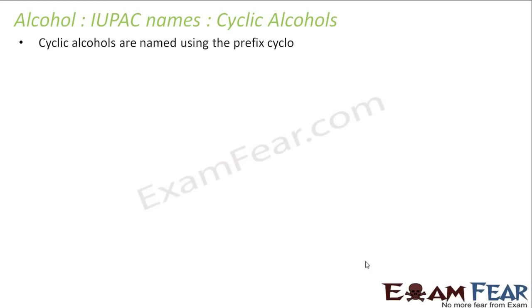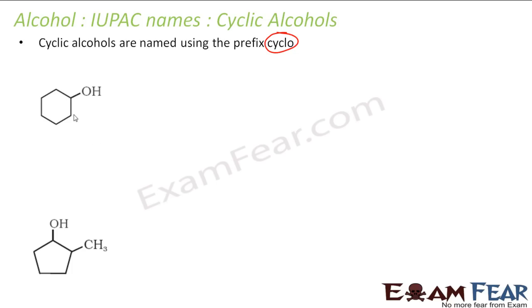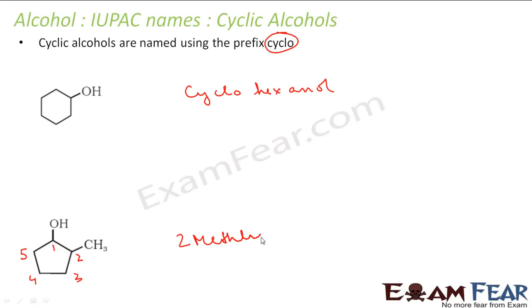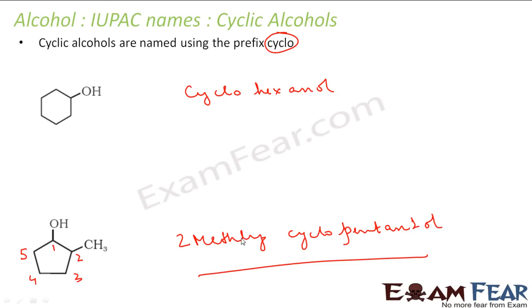Let's understand how to name cyclic alcohols — we use the prefix 'cyclo'. In this case, we have 1, 2, 3, 4, 5, 6 carbons in a ring — hexane — so it will be cyclohexanol. In the next case, we start numbering from the OH carbon: 1, 2, 3, 4, 5 — position 2 has a methyl group. The ring has 5 carbons with all single bonds and OH at position 1, so it is 2-methylcyclopentan-1-ol. The names are cyclohexanol and 2-methylcyclopentan-1-ol.